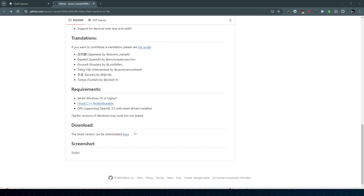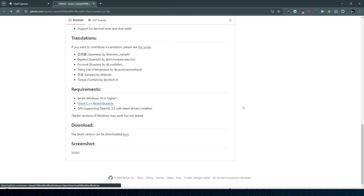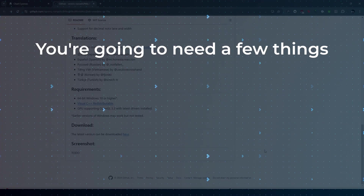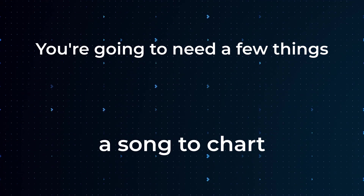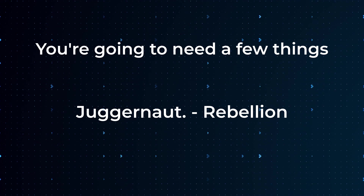All you need to do is scroll down to the bottom and click the download link. To keep everything organized, I'm going to save this into a Sonalist folder that I made — this is also where I'm going to store all my projects. Now we're going to need a song to chart. Chances are if you're watching this video, you probably already have a song in mind. For this video though, I'm going to be using the song Rebellion by Juggernaut.